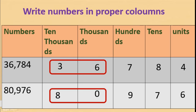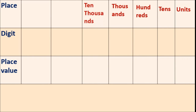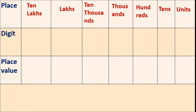Remember this. Now here one table is there with columns: units, tens, hundreds, thousands, ten thousands, lakhs, ten lakhs. Okay, up to ten thousand you know. Now this is new — lakhs and ten lakhs. We will write one digit in each place.